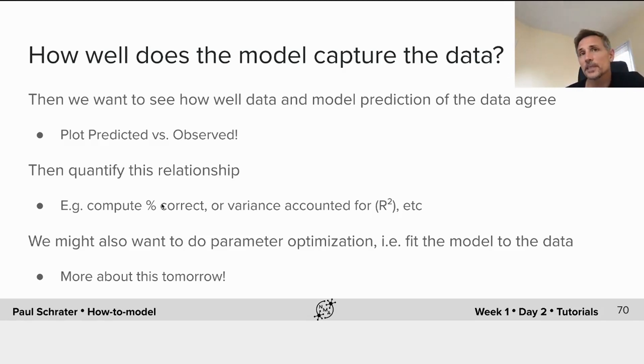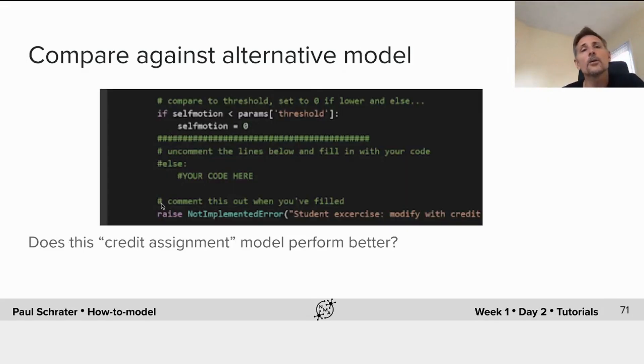We might want to do parameter optimization in order to see whether or not we can improve our model. But we haven't taught you those tools yet, so we'll have to save those for tomorrow's tutorials. Right now, what we'll do is we're going to compare our model against an alternative model.